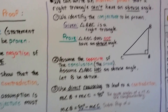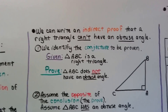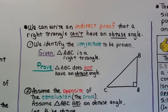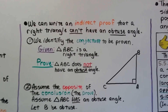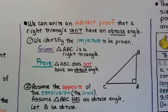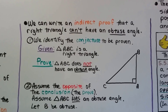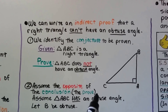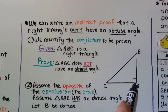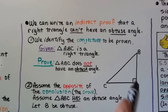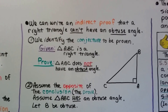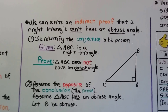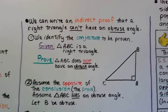So we can write an indirect proof that a right triangle can't have an obtuse angle. First thing we do is identify the conjecture to be proven. It's given that triangle ABC is a right triangle — we can see the little corner here, it's telling us it's a right triangle. We need to prove that triangle ABC does not have an obtuse angle.